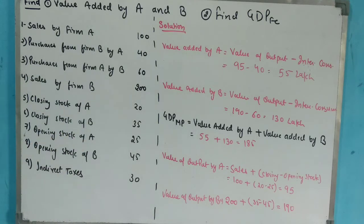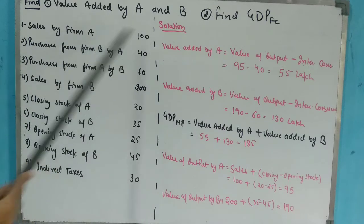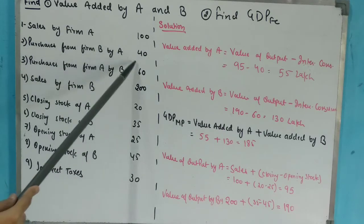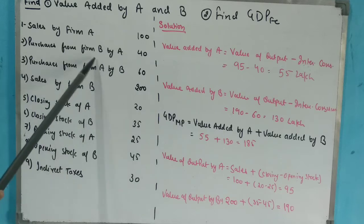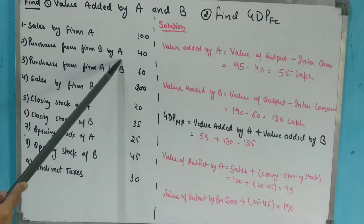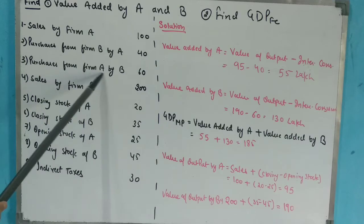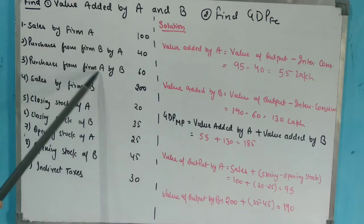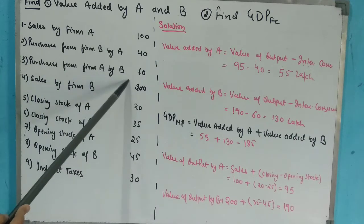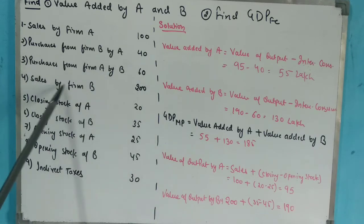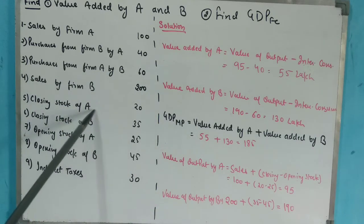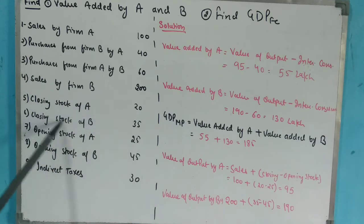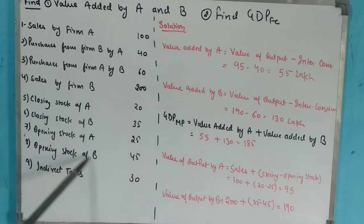Now coming to the question: Sales by Firm A = 100; Purchases from Firm B by A = 40, meaning A purchased 40 from B; Purchases from Firm A by B = 60, meaning B purchased 60 from A; Sales by Firm B = 200; Closing Stock of A = 20; Closing Stock of B = 35; Opening Stock of A = 25; Opening Stock of B = 45; Indirect taxes = 30.